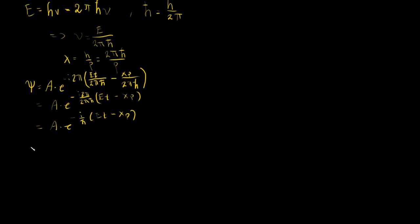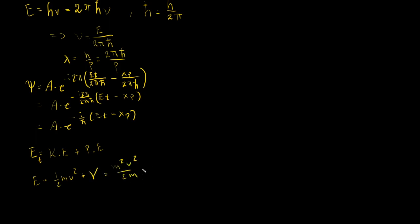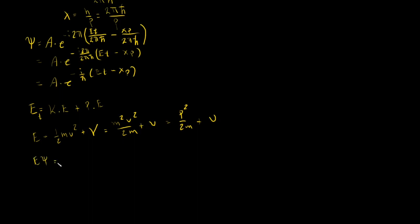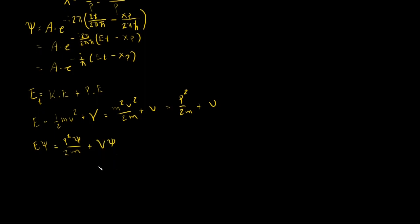The total energy E of the particle can be written as E total equals kinetic energy plus potential energy. In mathematical language, this is equal to (1/2)mv² plus V, which equals m²v²/2m plus V, which equals p²/2m plus V. Therefore, E·psi equals (p²·psi)/2m plus V·psi, where V is the potential energy of the particle, which is a function of x.